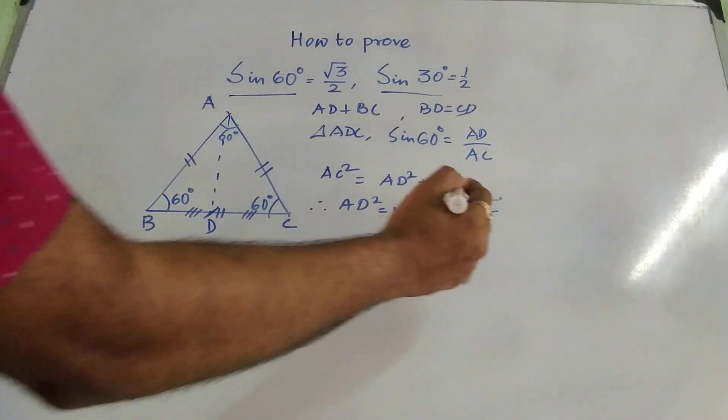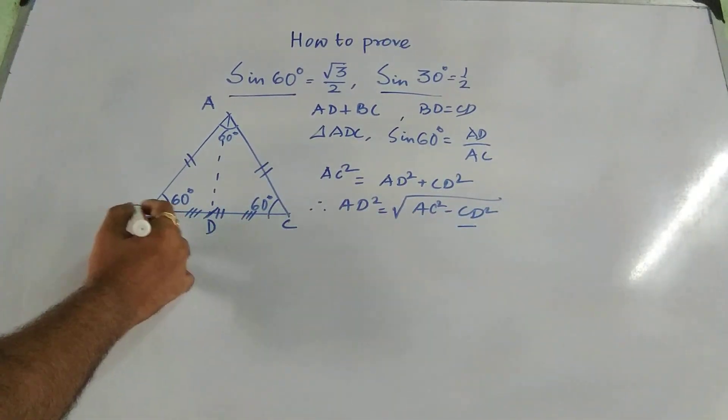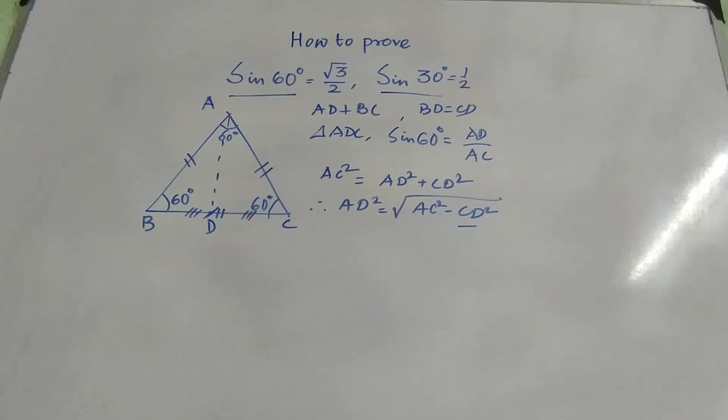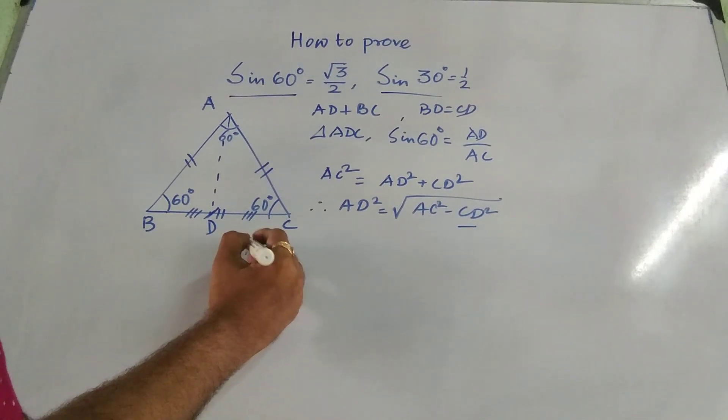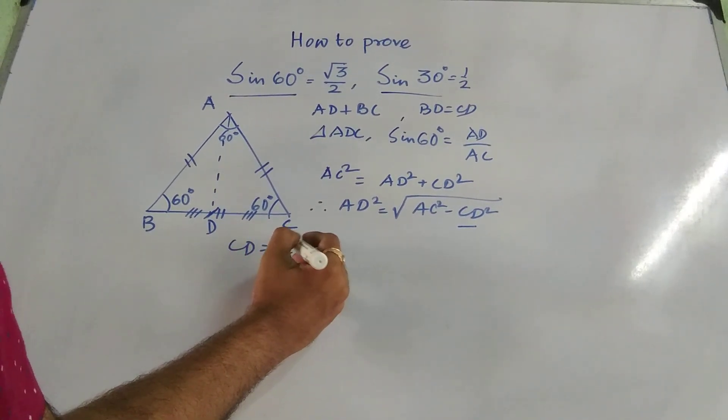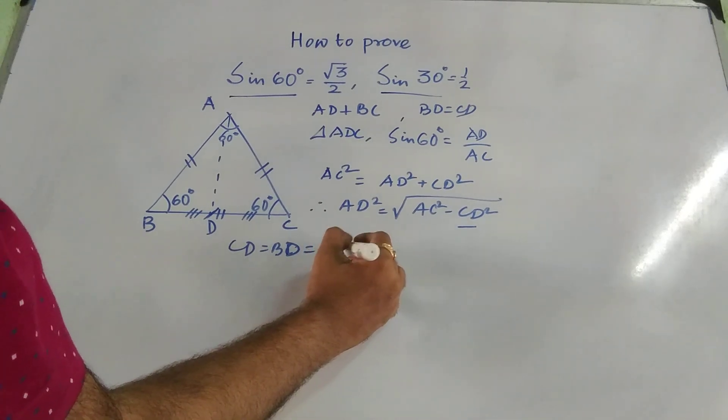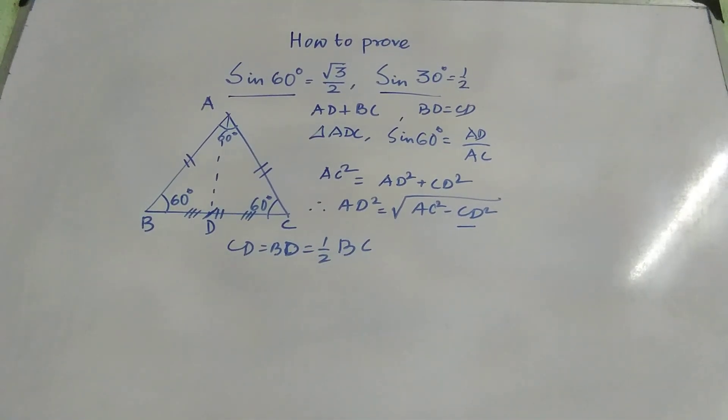So what is CD now? CD is same as BD, because D is the midpoint. So CD equal to BD, which is nothing but half of the side BC.